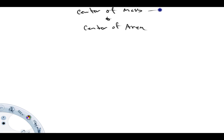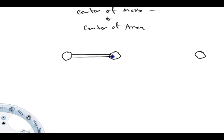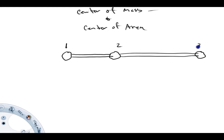So, center of mass. Imagine some sort of mass here, and another one, and another one. Imagine in this example they're connected by some sort of bar, but it's a very light bar. So all the mass is contained basically here, here, and here. I'm going to call this mass one, mass two, mass three.